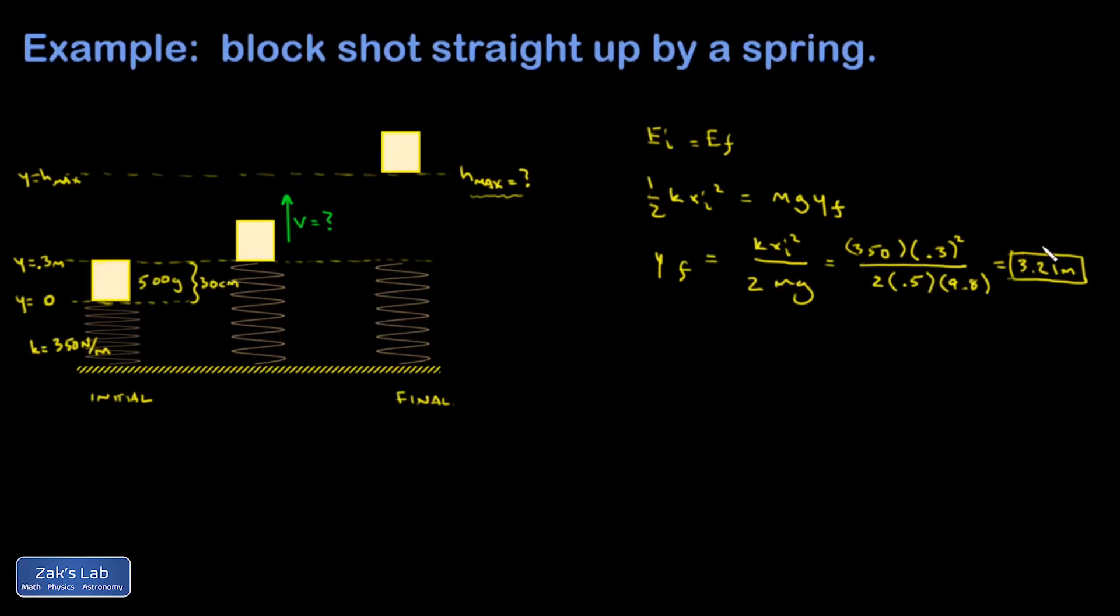So it's probably good to remind you that the tradeoff with energy methods is that I don't know anything about the details that are happening in between the initial and final state. It was really complex. I had the block accelerating at some rate until it shot off of the spring, and then it was in a vertical freefall problem, slowing down until it got to that maximum height. And I don't know any of those details. All I have is the answer to my very specific question, how high did it go?